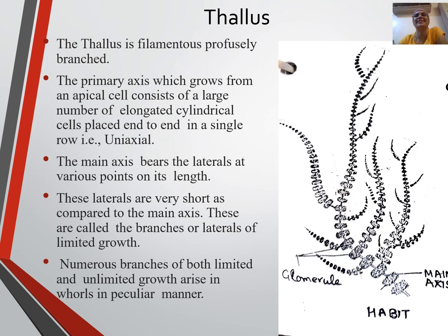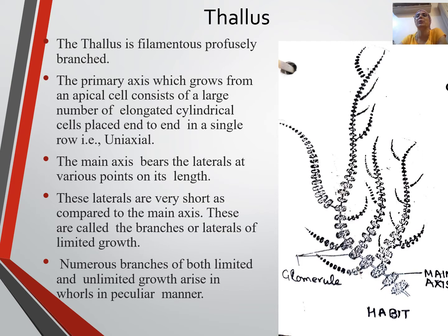Now let us study the thallus structure. The thallus is filamentous and profusely branched. The primary axis, which grows from an apical cell, consists of a large number of elongated cylindrical cells placed end to end in a single row — that is uniseriate. The main axis bears laterals at various points on its length. The plant body is differentiated into node and internode-like structures. At each node arise short laterals in a beaded form.